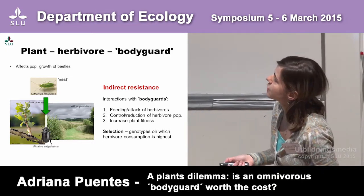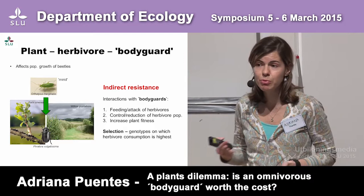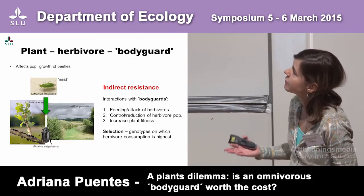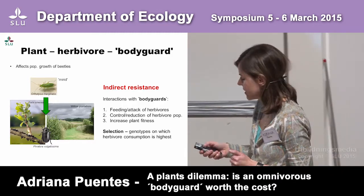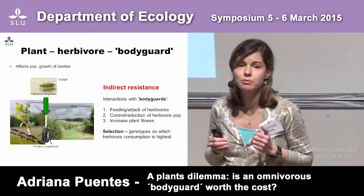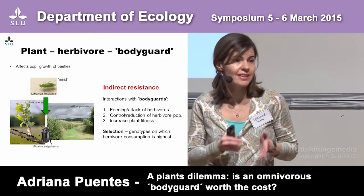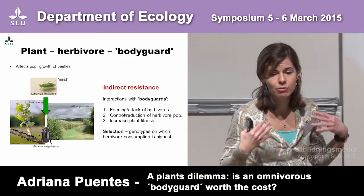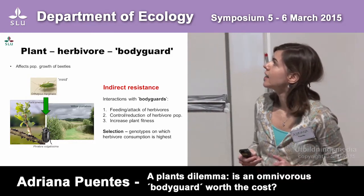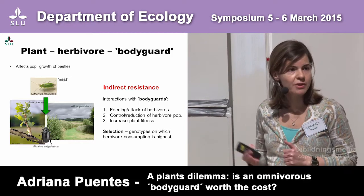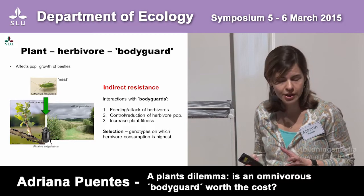For this particular system, we know that the myrid is an effective predator of the leaf beetle and negatively affects the population growth rate of the beetles. However, this is an omnivorous bodyguard, meaning it can also use the plant as its food. And you can understand that from a plant's perspective, that poses a dilemma.